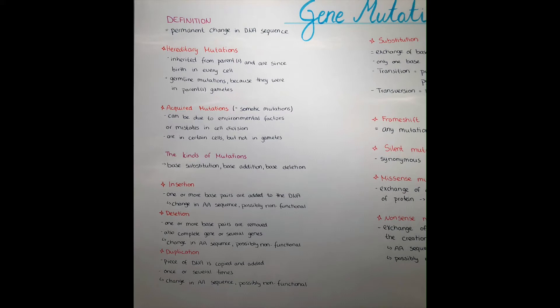because they were in the parents' gametes and are passed on to the baby. Acquired mutations are also called somatic mutations and they can be due to environmental factors like UV radiation or x-ray radiation, sunlight, smoking, or mistakes in the cell division — so in mitosis. These mutations are in certain cells but not in the gametes, so they are not passed on to the next generation.